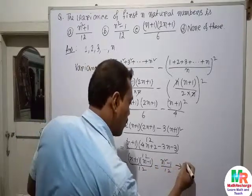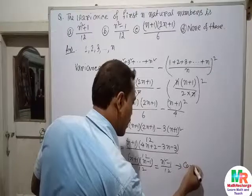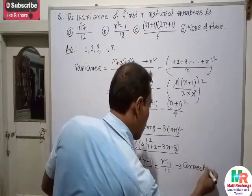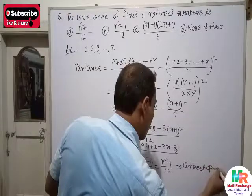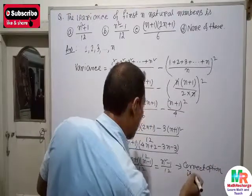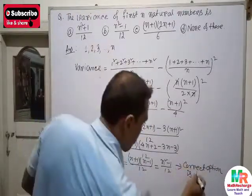The correct option is option B, that is (n² - 1) / 12.